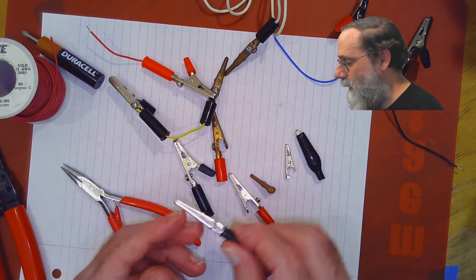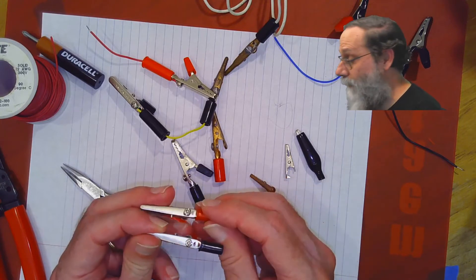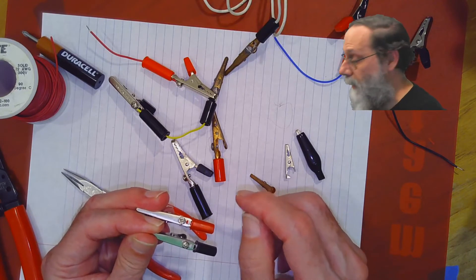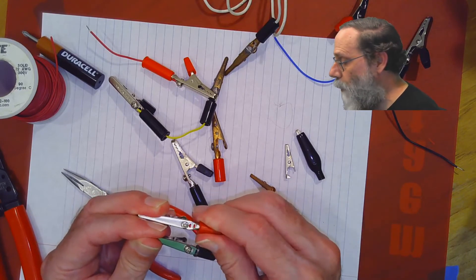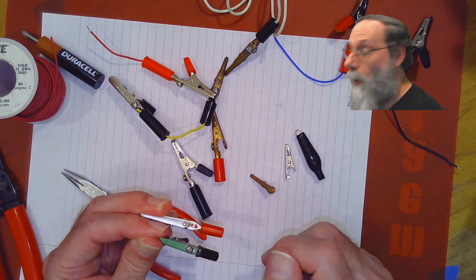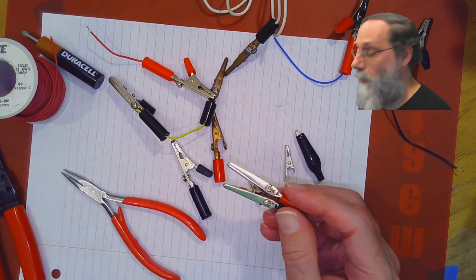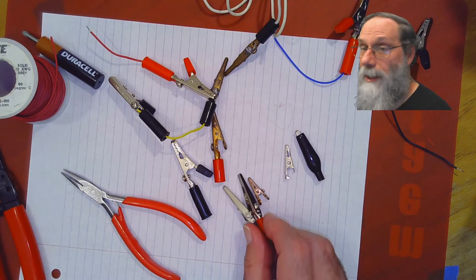In cheaper ones, like the ones we'll probably have, that extra step of pressing that bar down hasn't been done, and so it's kind of hard to thread the wire up through that hole. It can be done, but it's just a little bit more difficult, and that's why these are cheaper. It's one less step in the manufacturing.